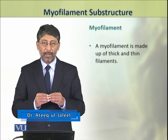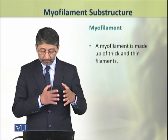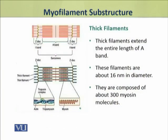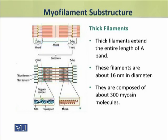A myofilament is composed of thick and thin filaments. The thick filaments extend the entire length of the A-band. These filaments are about 16 nanometers in diameter and are composed of about 300 molecules of myosin protein.